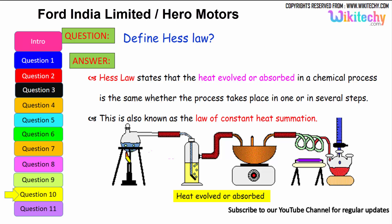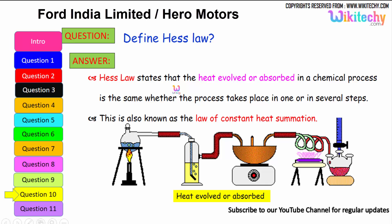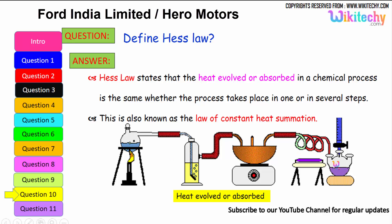Define Hess's Law. This is one of the very important questions. In the case of heat generated between an object and its emissions, Hess's Law states that the heat evolved or absorbed in a chemical process is the same whether the process takes place in one step or in several steps. This is also known as the law of constant heat summation.